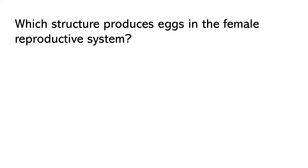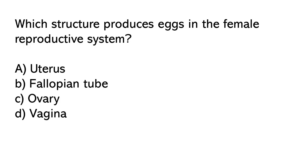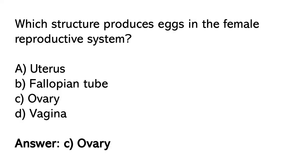Which structure produces eggs in the female reproductive system? Options: A) Uterus, B) Fallopian tube, C) Ovary, D) Vagina. So the correct answer is option C.